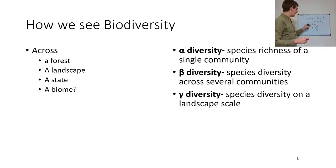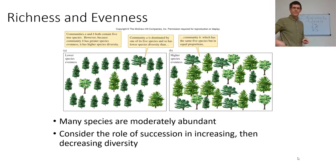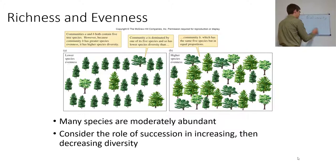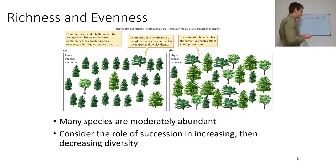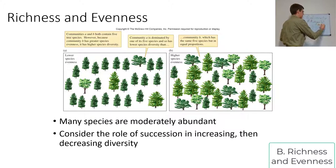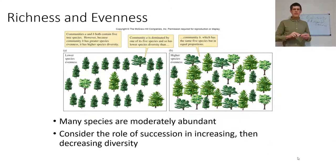Seeing biodiversity at different levels — higher and higher, or lower and lower magnification. We're going to define diversity in two ways: species richness and species evenness. Species richness is simply how many species are there.